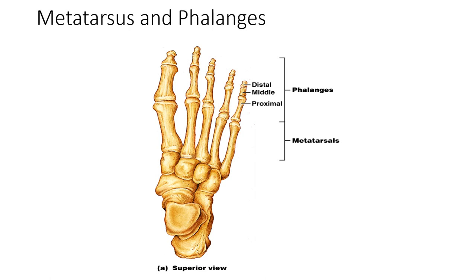The metatarsals and phalanges: there are five metatarsals. The enlarged head of metatarsal one forms the ball of the foot. There are 14 bones in the toes — each digit has three phalanges except for the hallux, which only has a proximal and distal phalange. Metatarsals one through five, cuneiforms one, two, and three, cuboid, navicular, talus, and calcaneus — all identified in this view.